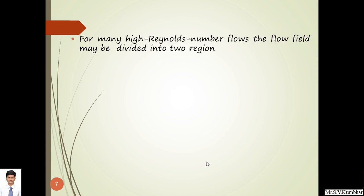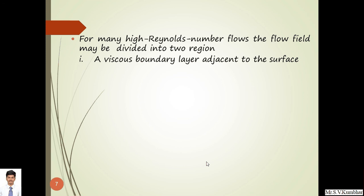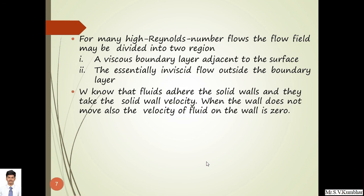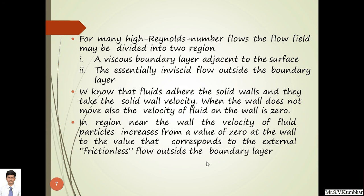For many high Reynolds number flows, the flow field may be divided into two regions, very similar to hydrodynamic boundary layer. First region is a viscous boundary layer adjacent to the surface — every fluid has tendency to adhere to the surface whenever it flows over it. Second, the essentially inviscid flow outside the boundary layer where the velocity becomes mainstream velocity. Fluids adhere to solid walls and take the solid wall velocity — that is the no-slip condition. When the wall does not move, the velocity of the fluid is 0, and in the region near the wall, velocity increases from 0 at the wall to the external frictionless flow outside the boundary layer.